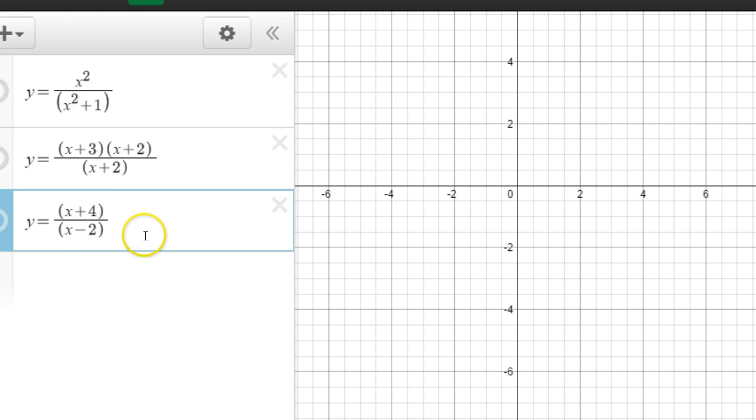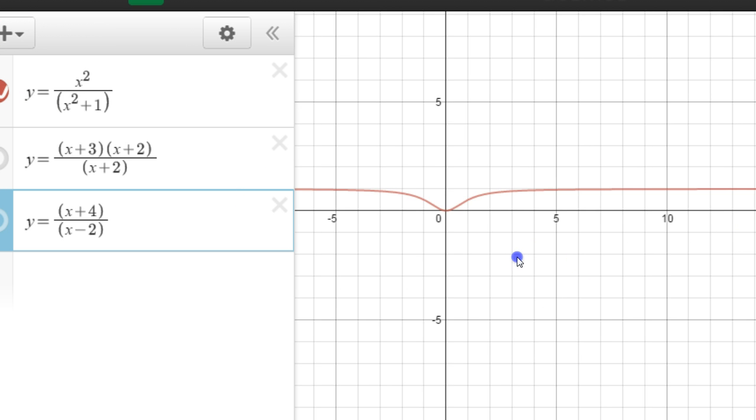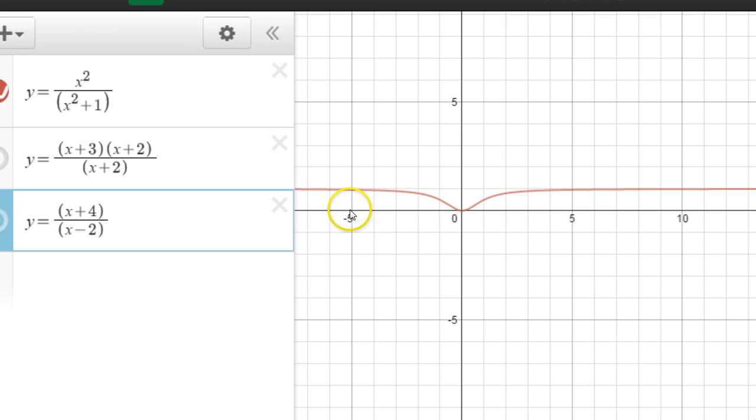All right, now here we actually have several different types of rational functions, and I'm going to talk about each one, and the points of discontinuity and continuity with them. So, okay, this one right here would have no points of discontinuity. This is called a continuous graph. The reason being is that there's no number that I can plug in here that will make this a false type of graph.